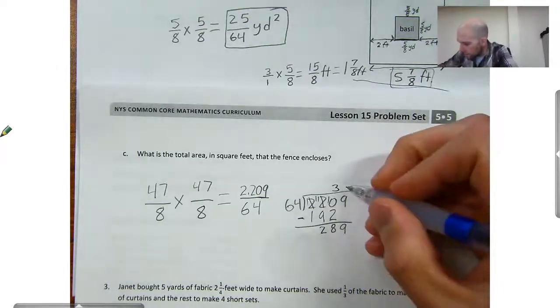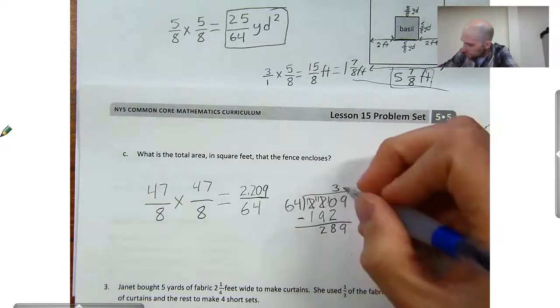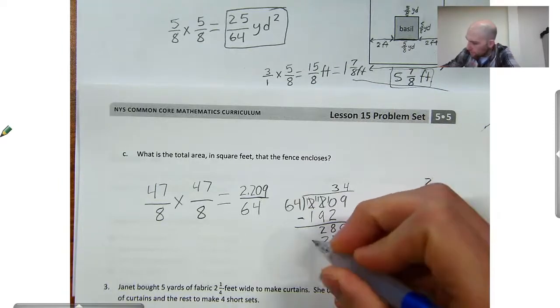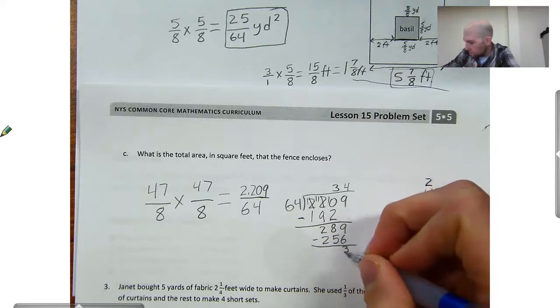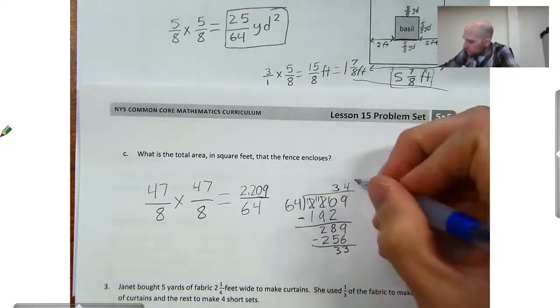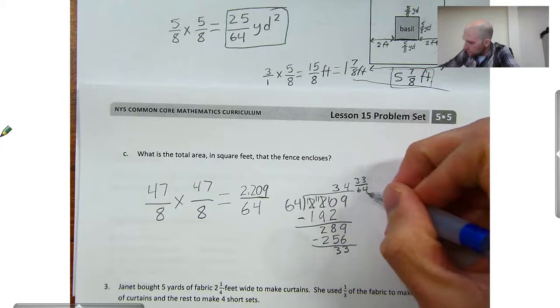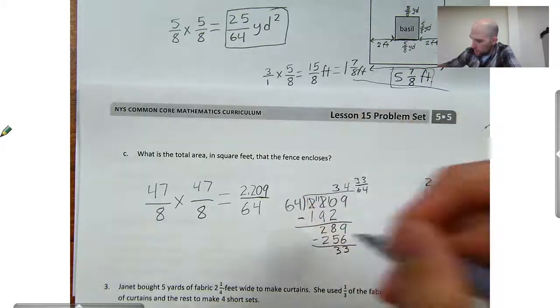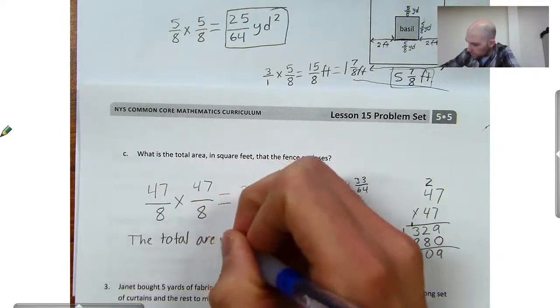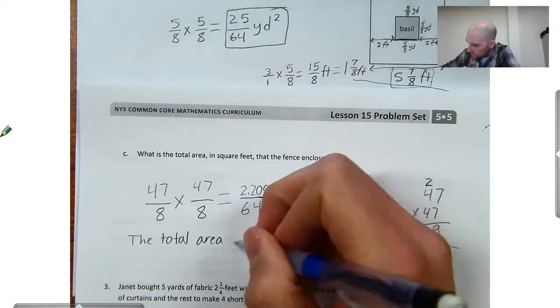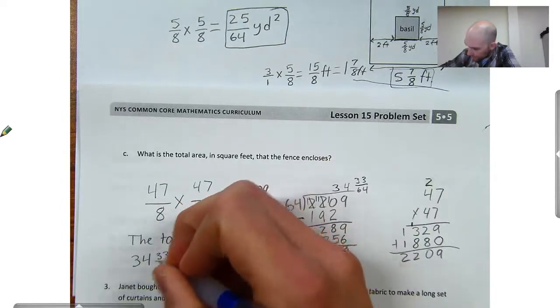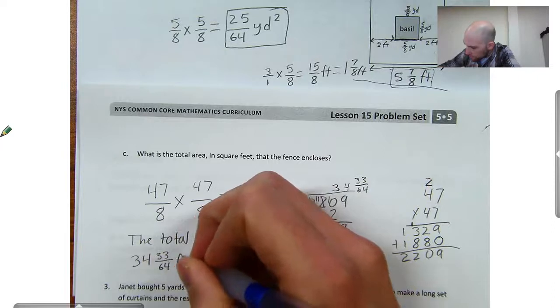Subtract. We'll do that with 33 sixty-fourths. And it looks like the total area is 34 and 33 sixty-fourths square feet.